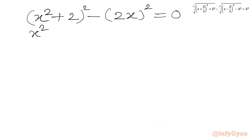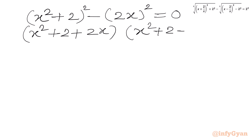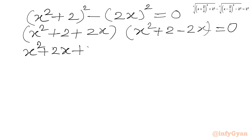Applying the difference of two squares formula to (x² + 2)² − (2x)² = 0, we get (x² + 2 + 2x)(x² + 2 − 2x) = 0. By the zero product rule, either x² + 2x + 2 = 0 or x² − 2x + 2 = 0.